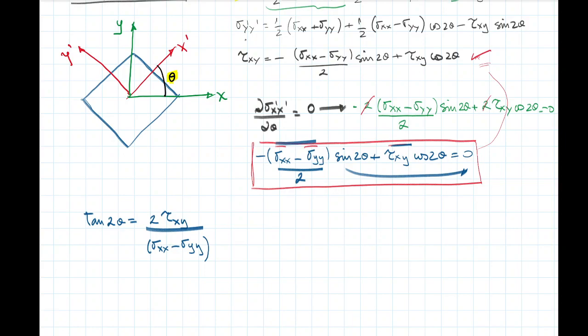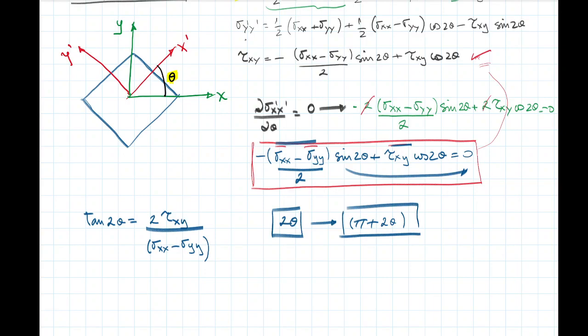The solution to this equation — which angle makes this result zero — is going to give us two solutions. One is going to be a determined angle theta, and the second solution is going to be out of phase with this angle by a value of pi. These two values of angles are going to provide zeros here: one gives the maximum and the other gives the minimum.